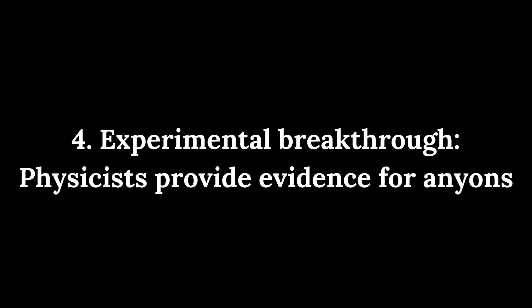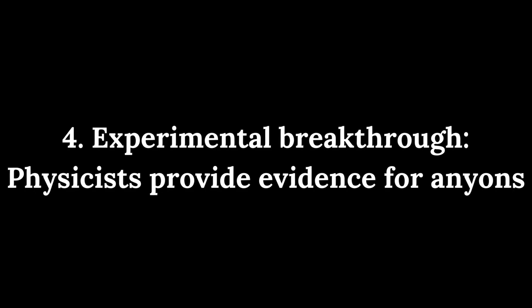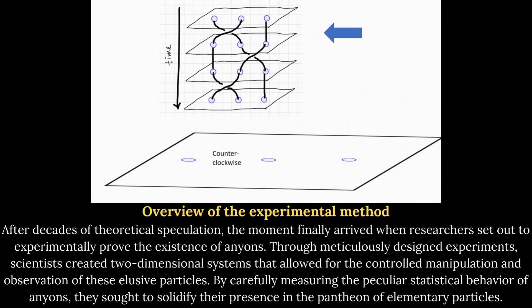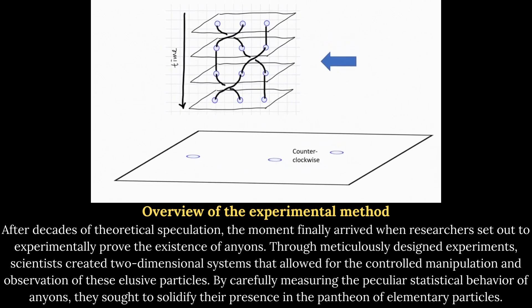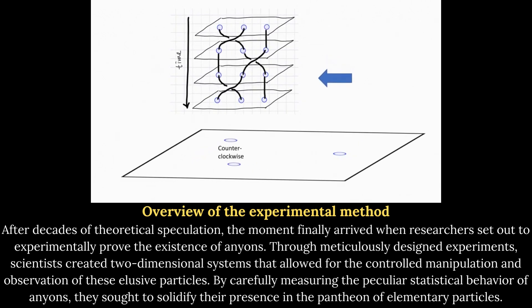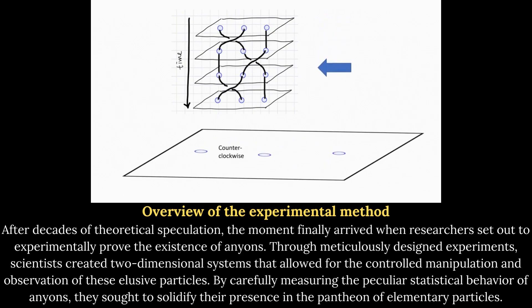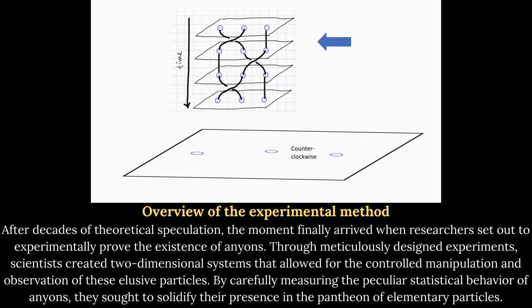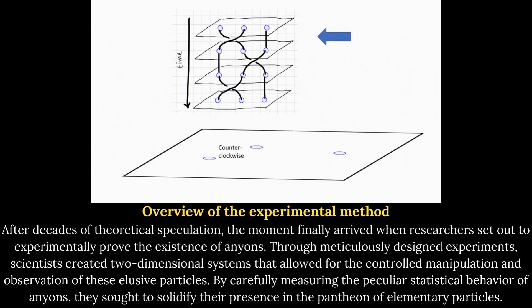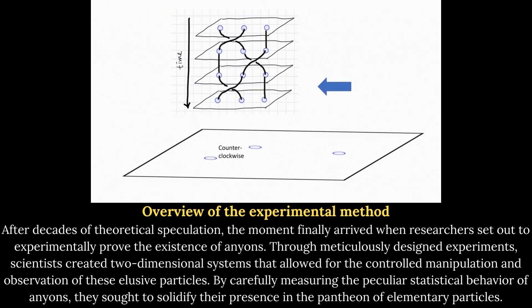Experimental breakthrough: physicists provide evidence for Anyons. After decades of theoretical speculation, the moment finally arrived when researchers set out to experimentally prove the existence of Anyons. Through meticulously designed experiments, scientists created two-dimensional systems that allowed for the controlled manipulation and observation of these elusive particles. By carefully measuring the peculiar statistical behavior of Anyons, they sought to solidify their presence in the pantheon of elementary particles.